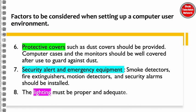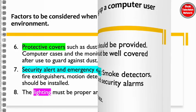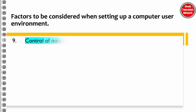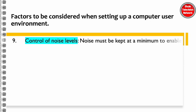The provision of lighting must be proper and adequate. The ninth factor is the control of noise levels. Noise must be kept at a minimum to enable users to concentrate on tasks.